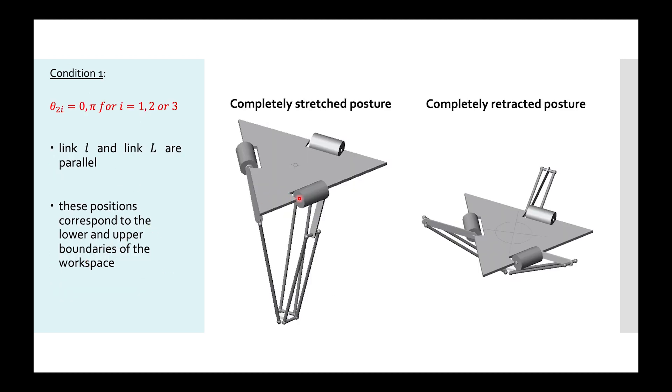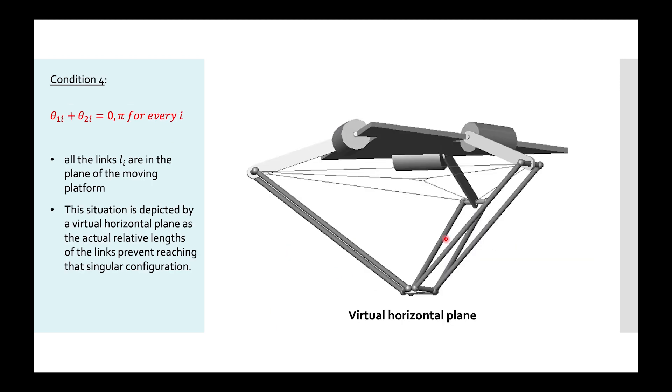The first condition corresponds to the case when the two links are parallel, so when the posture is completely stretched or retracted, while the fourth condition corresponds to the case when the links lower case L i are in the plane of the moving platform that is actually unreachable.